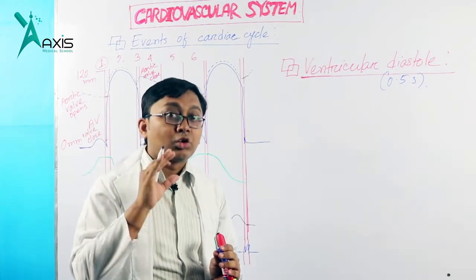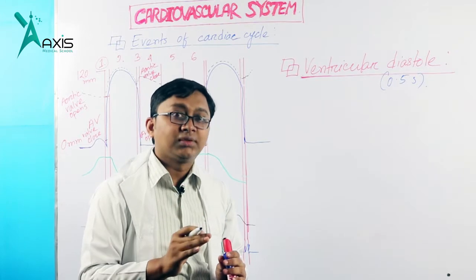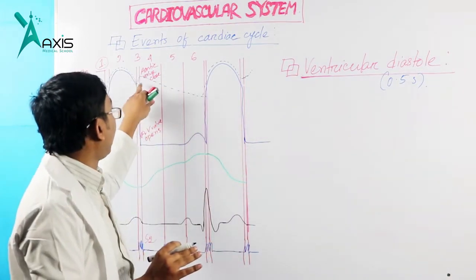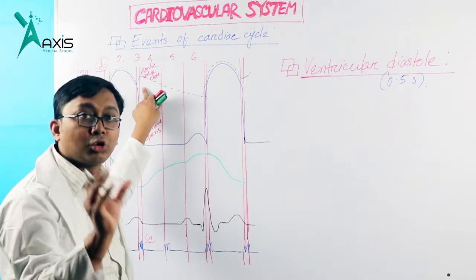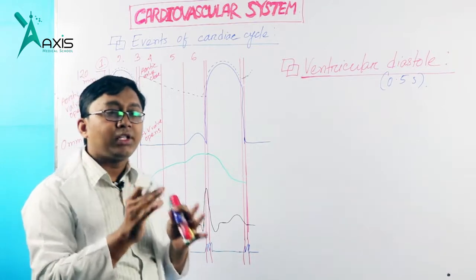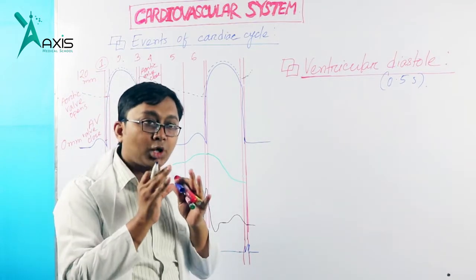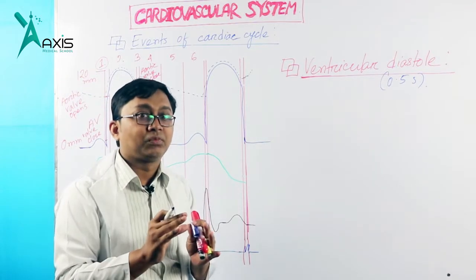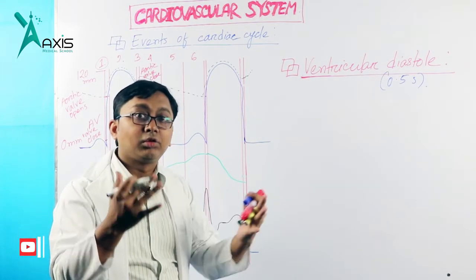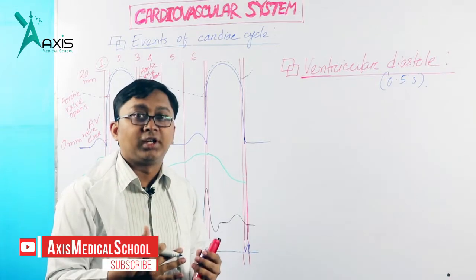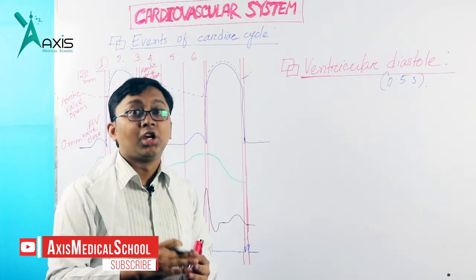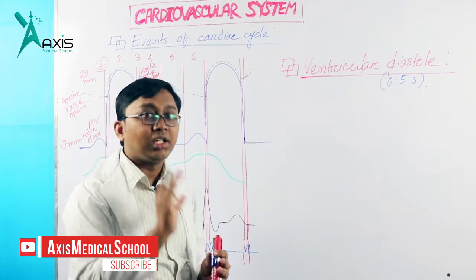Ventricular diastole starts when the aortic valve closes. After the aortic valve closes, blood enters the ventricle from the atrium.